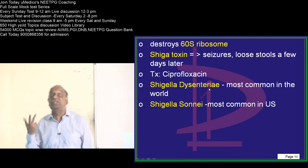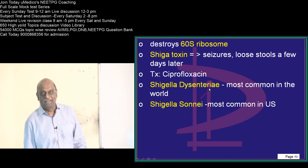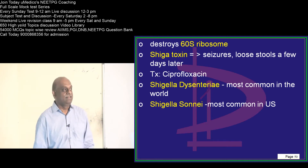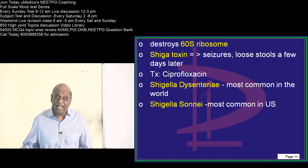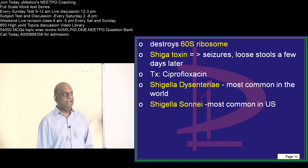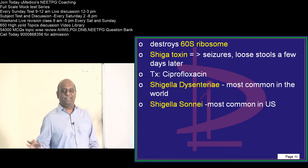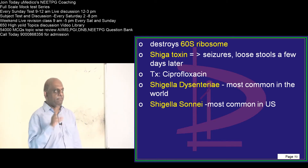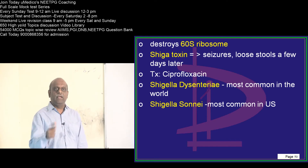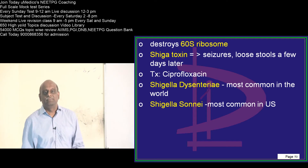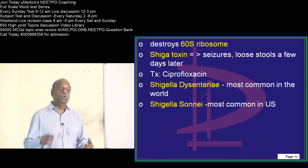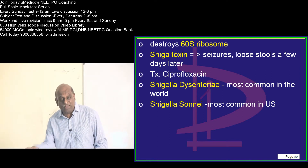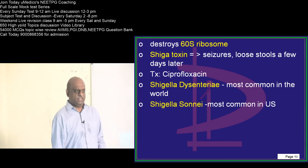Another favorite bullet of the examiner: 30S, 28S, 60S — which S is the one that Shigella goes and inhibits? It destroys the 60S ribosome. Don't forget the 60S. On the uMedico app you can set up a daily reminder. There are 1.25 lakh students competing for the exam, so be sure it is survival of the fittest in the Indian entrance scenario. Know the smart pickup of favorite exam topics — be thorough with that.